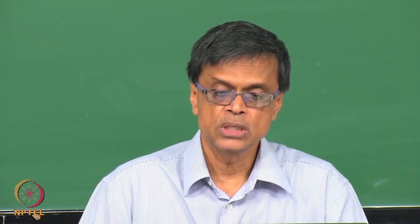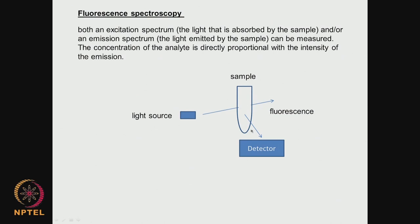The one that is quite commonly used is fluorescent spectroscopy. You take the sample and there is a light source. Both the excitation spectrum — that is the light absorbed by the sample — and the emission spectrum — that is the light emitted by the sample — can be measured. We can measure the concentration of the analyte, which is directly proportional to the intensity of the emission.